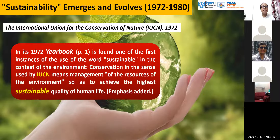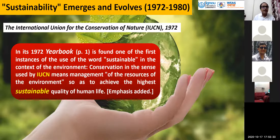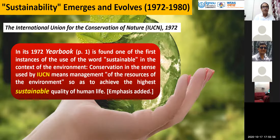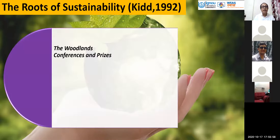The International Union for Conservation of Nature (IUCN), in its 1972 yearbook, is found to have one of the first instances of the use of the word 'sustainable' in the context of the environment. Conservation, as used by the IUCN, means management of the resources of the environment so as to achieve the highest sustainable quality of human life.